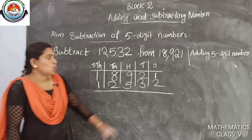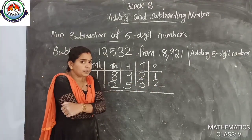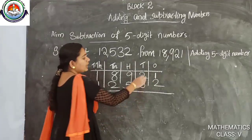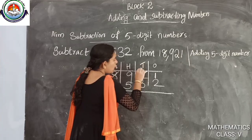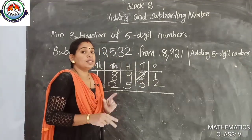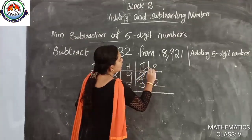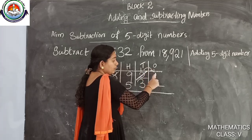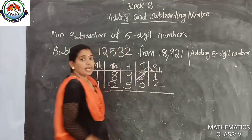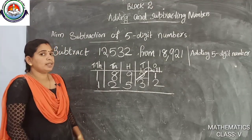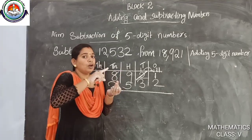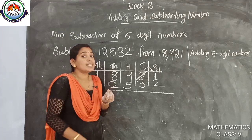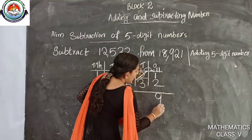Then we subtract. 1 minus 2 — is it possible? No. So we borrow 1 from the tens place. The 2 in tens becomes 1, and the ones place becomes 10 plus 1 equals 11. 11 minus 2: counting from 2 upward — 3, 4, 5, 6, 7, 8, 9, 10, 11 — that is 9 fingers, so 11 minus 2 is 9. Now tens place is 1. 1 minus 3 is not possible, so we borrow 1 from the hundreds 9, which becomes 8, and tens becomes 11. 11 minus 3: counting gives 8 fingers, so the answer is 8.